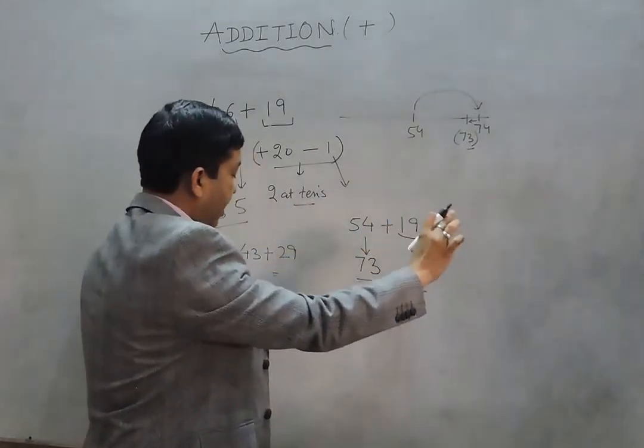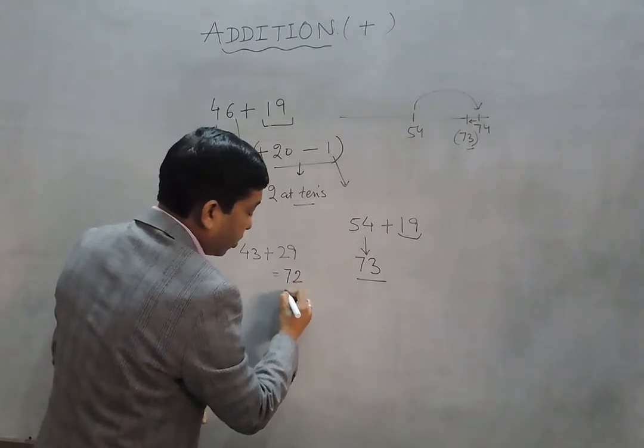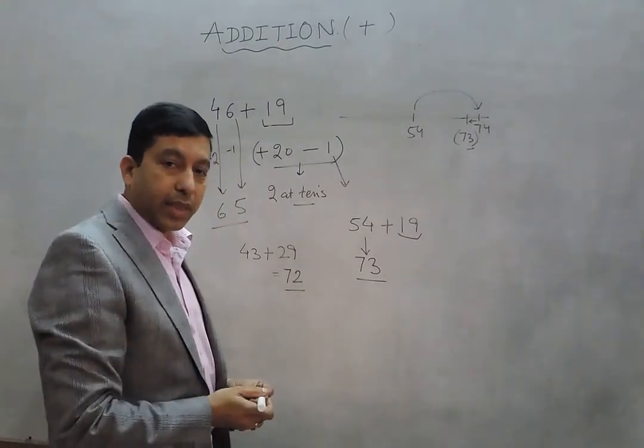And from 73 we come back 1, which gives us 72. So this is the correct answer for this. Thank you.